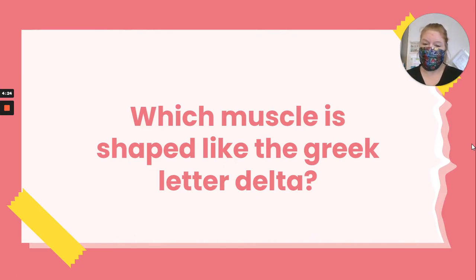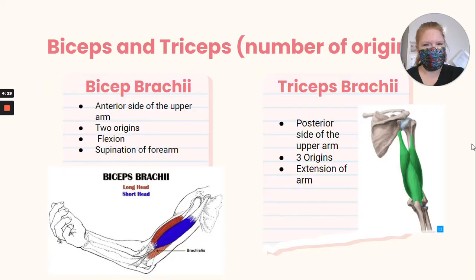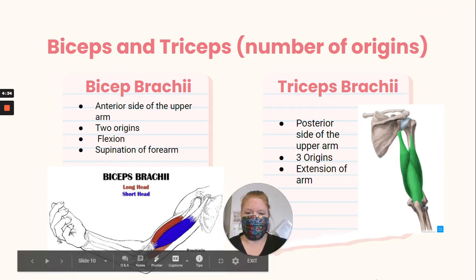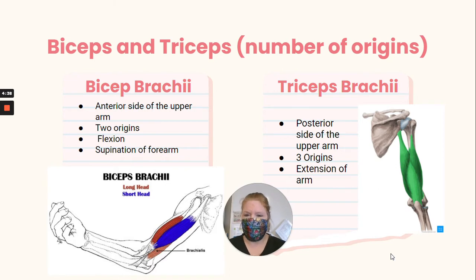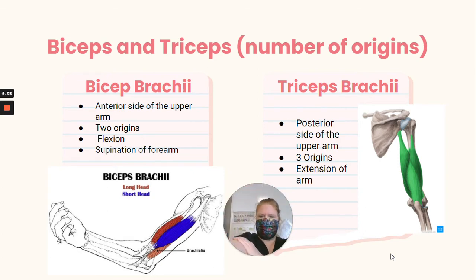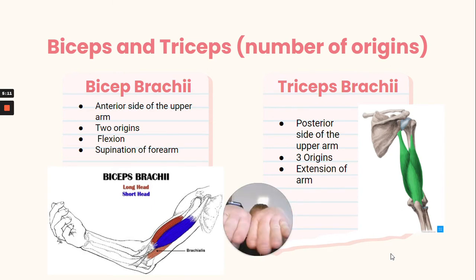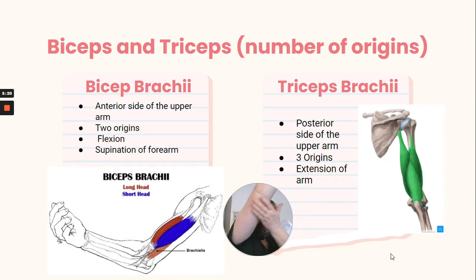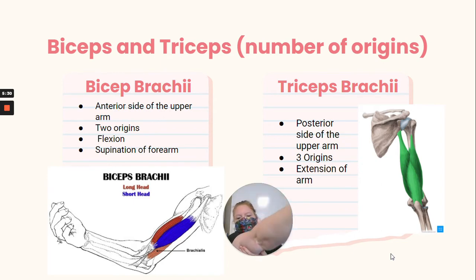Which muscle is shaped like the Greek letter delta? That was the deltoid. Then we have the biceps brachii and triceps brachii. The brachii part refers to the arm. The biceps brachii is on the anterior side of your upper arm — bi means two, so it has two origins. It's responsible for flexion and supination of the forearm. The triceps brachii is on the posterior side of your upper arm — tri because it has three origins — and it's responsible for extension of the arm.